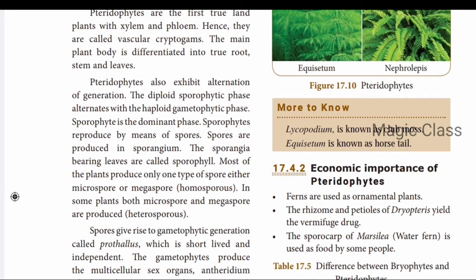Pteridophytes also exhibit alternation of generation. The diploid sporophytic phase alternates with the haploid gametophytic phase. In pteridophytes, the sporophyte is the dominant phase — unlike bryophytes where the gametophyte is dominant. Sporophytes reproduce by means of spores produced in a sporangium. The sporangium-bearing leaves are called sporophylls.